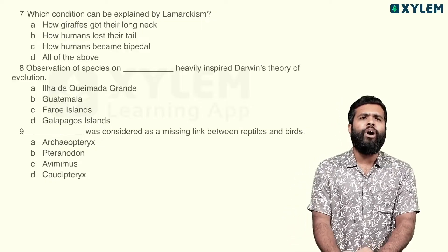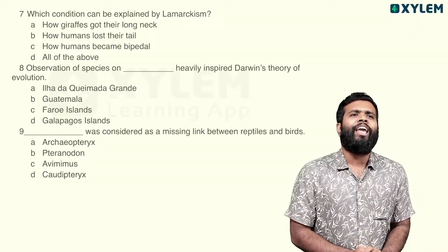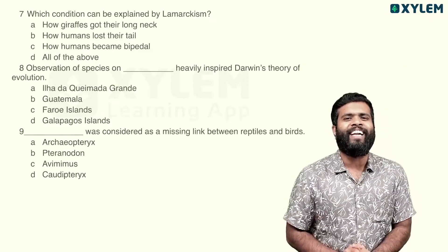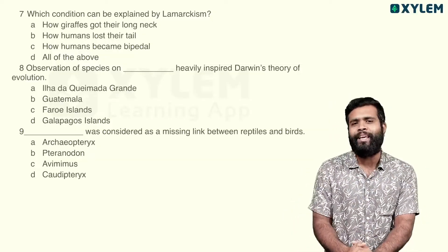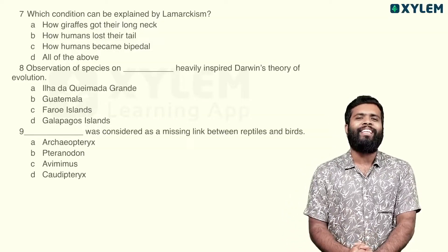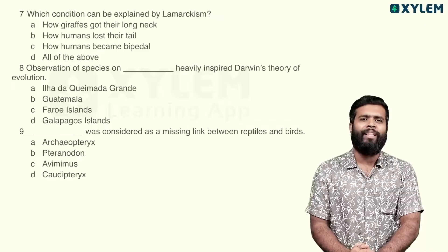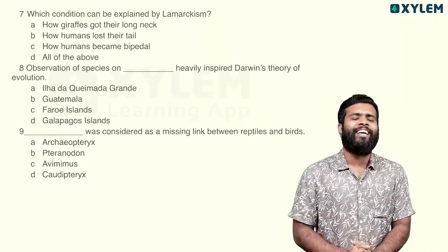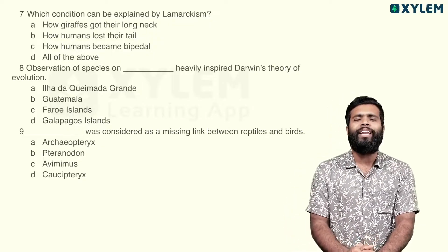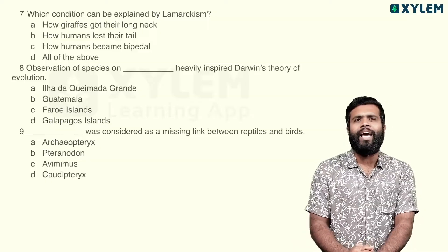Observation of species on dash heavily inspired Darwin's theory of evolution. Darwin observed on the HMS Beagle voyage. The island is Galapagos. So Galapagos — option D — is the right answer.